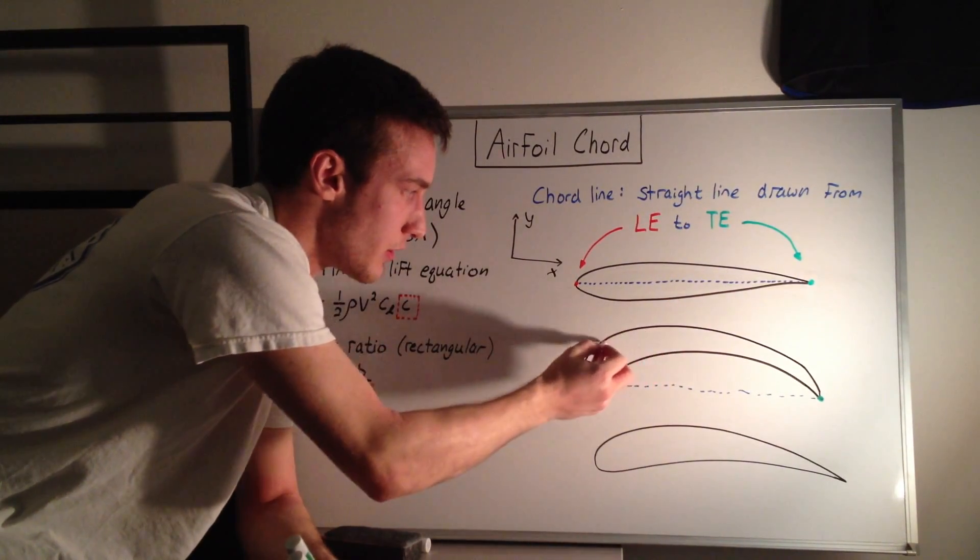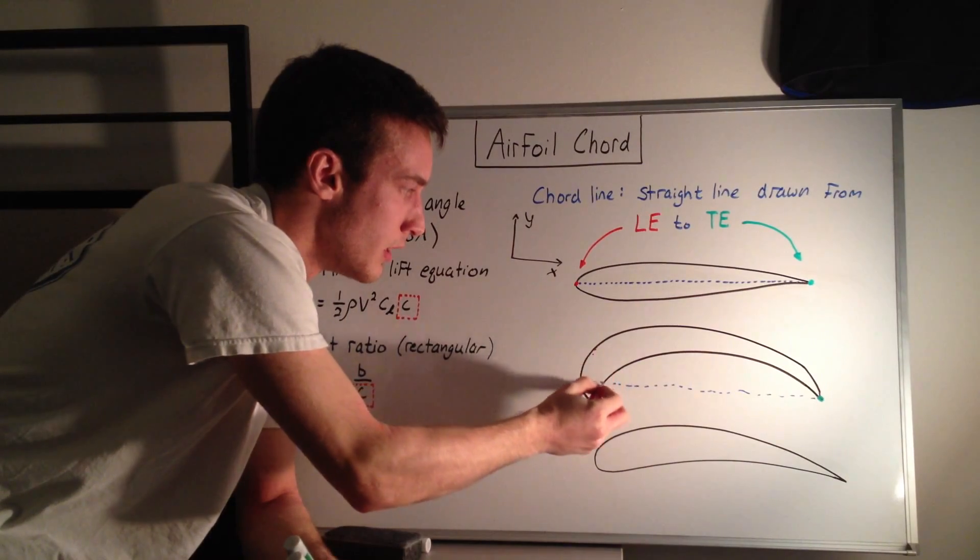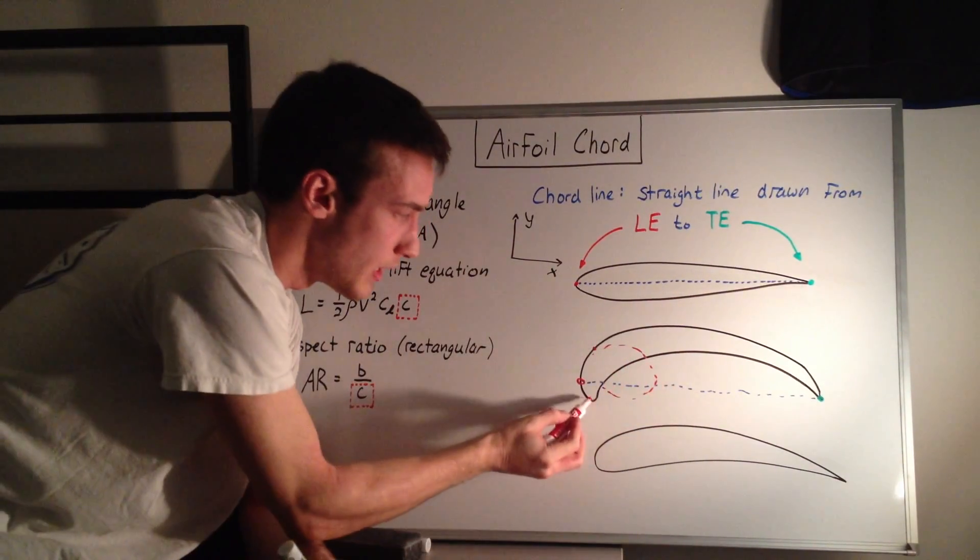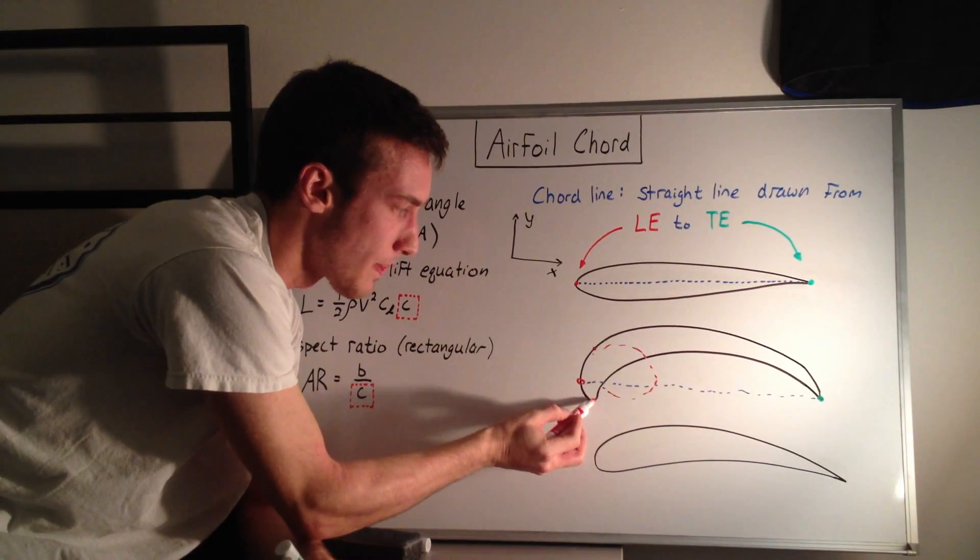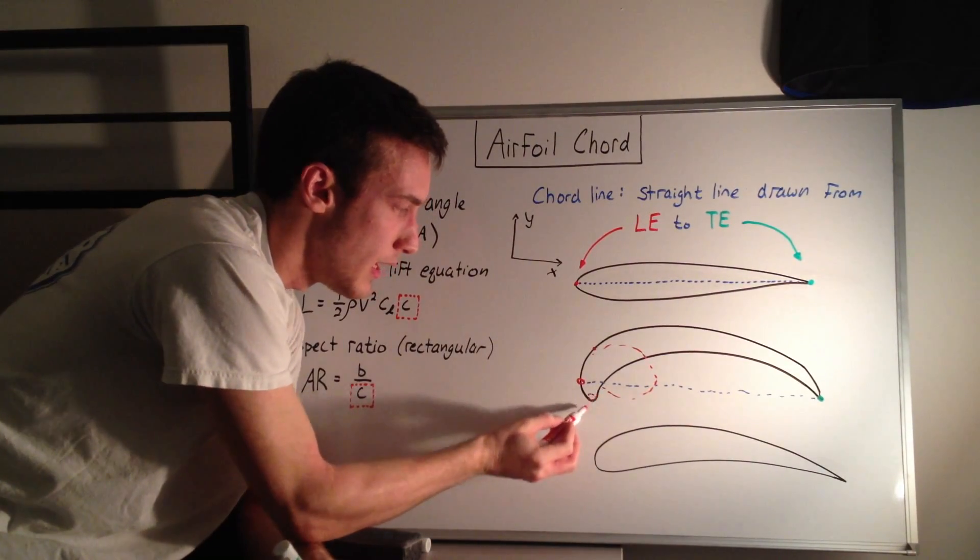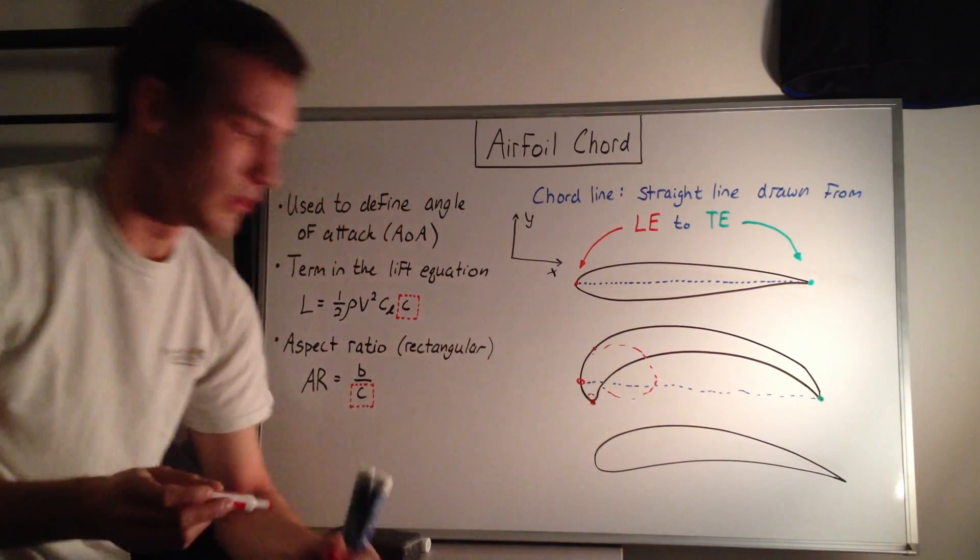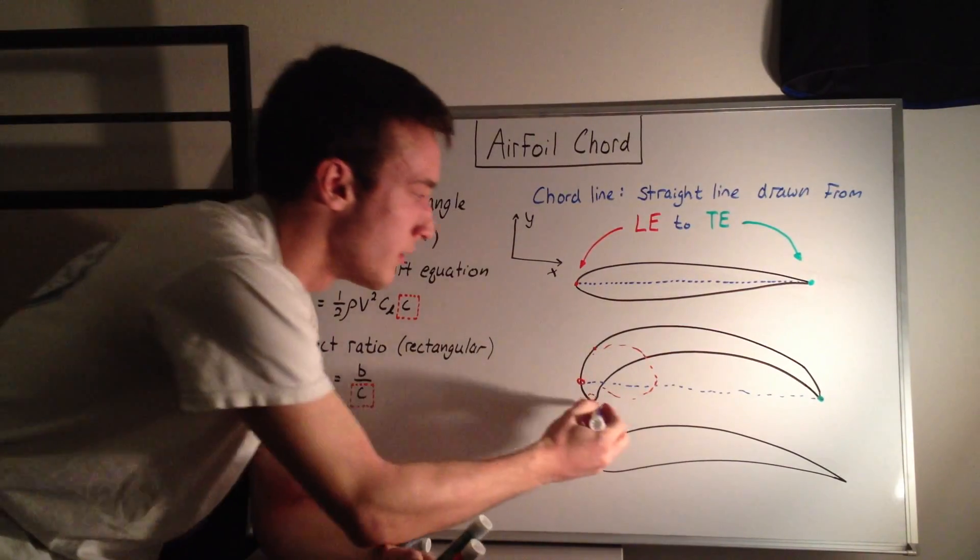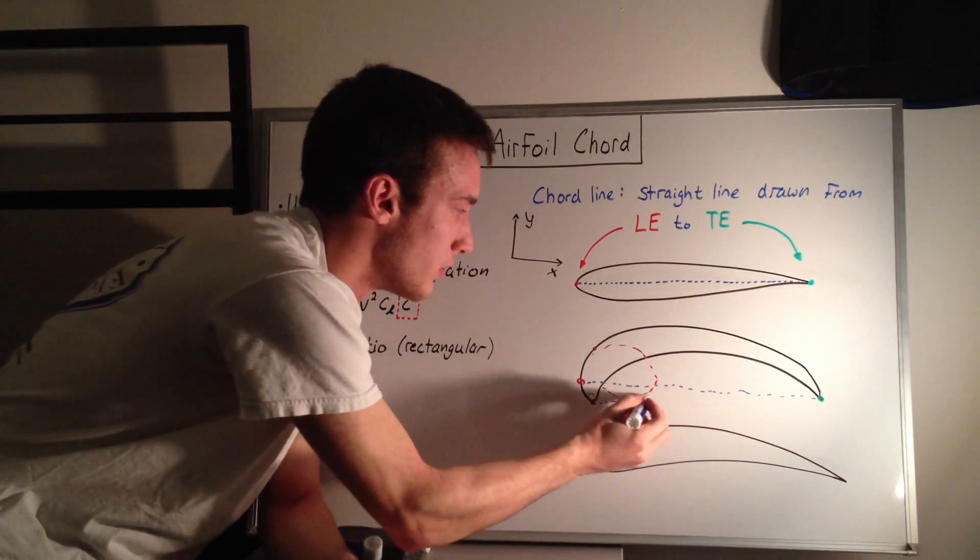if you draw imaginary circles, here you'd have a pretty big circle based off of this point here, but down here you can see that the radius is the smallest, and then you could say that this point right here is the leading edge, in which case you'd have the cord line look something like this.